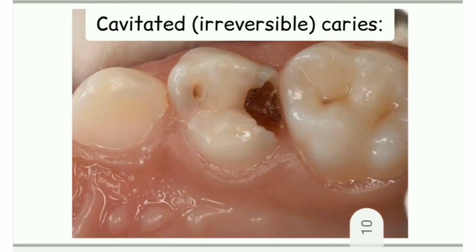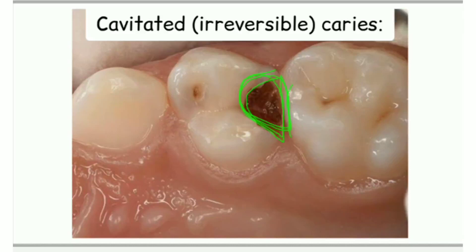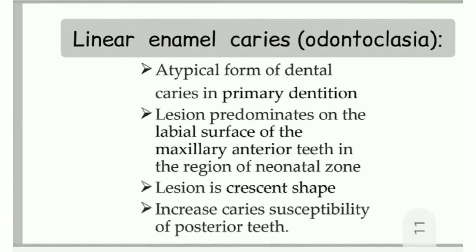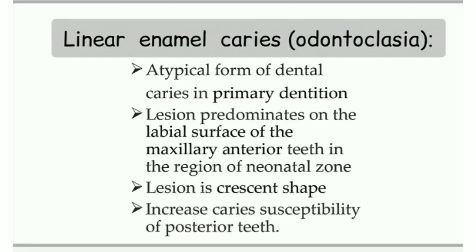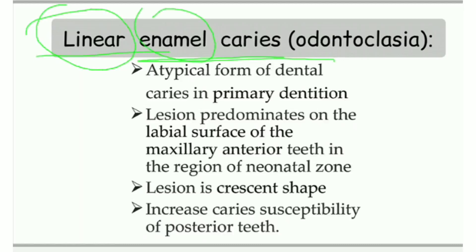You can see in this picture the cavity has already formed — whatever we do, it will not go back to normal again. This is the typical picture of irreversible cavitated caries. Next, moving forward to linear enamel caries — as the name suggests, it is something linear and it is present in the enamel.